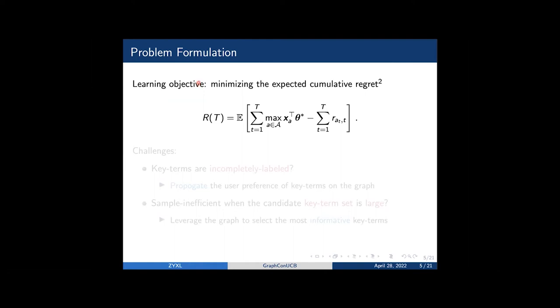The learning objective of our agent is to minimize the expected cumulative regret, which is defined as the difference between the rewards obtained by recommending the optimal arms and the rewards obtained by the agents.